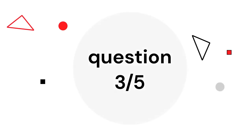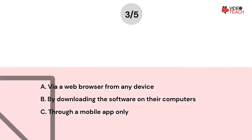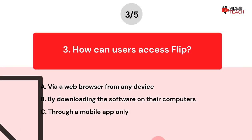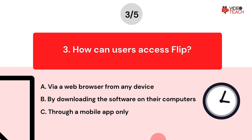Question number three. How can users access FLIP? Option A: Via a web browser from any device. Option B: By downloading the software on their computers. Option C: Through a mobile app only. Now you have about 15 seconds to think about your answer.